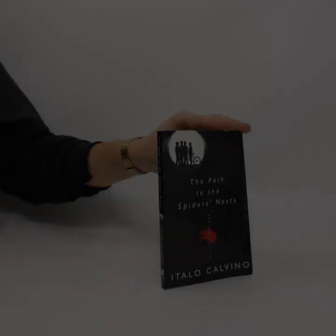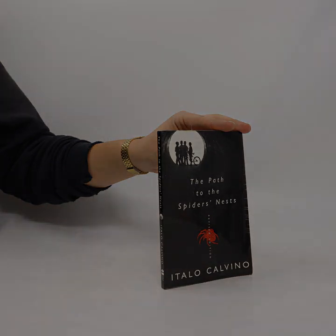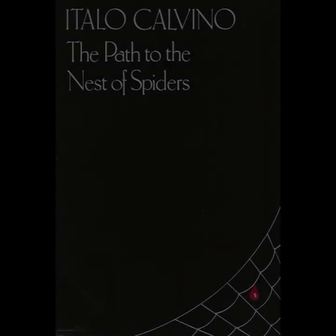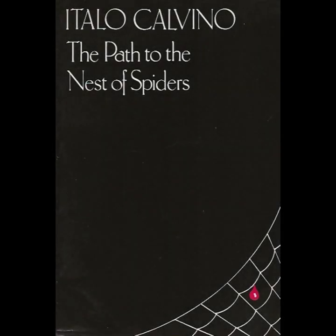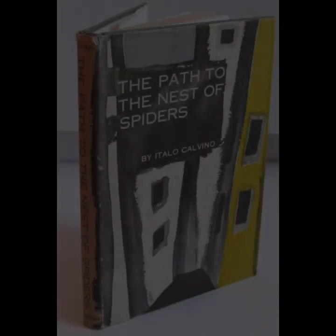Calvino's portrayal of war is not merely as a backdrop but as a transformative force that shapes and distorts the lives of its characters. The spider's nests in the novel symbolize the intricate and often dangerous webs of political and social entanglements that Pin finds himself caught in. The title reflects the pervasive and inescapable nature of these entanglements, as well as the sense of danger and deception that characterizes the world Pin navigates.